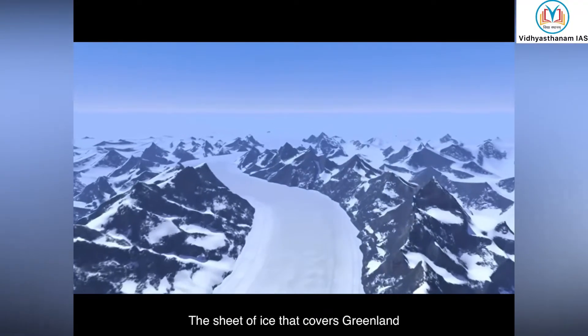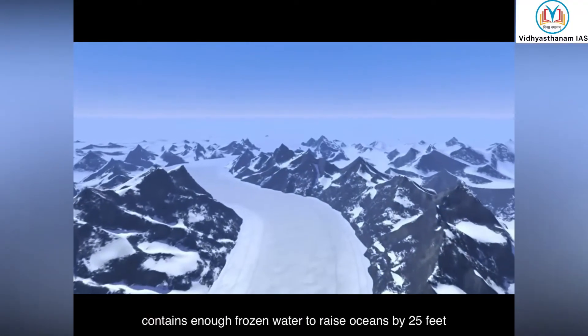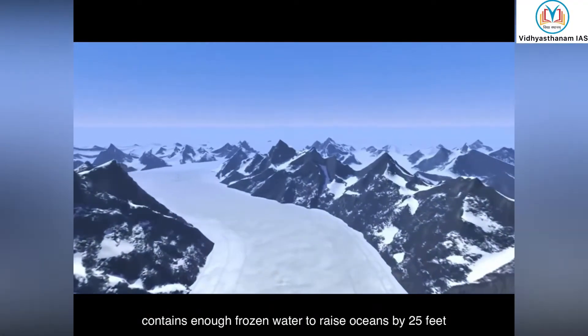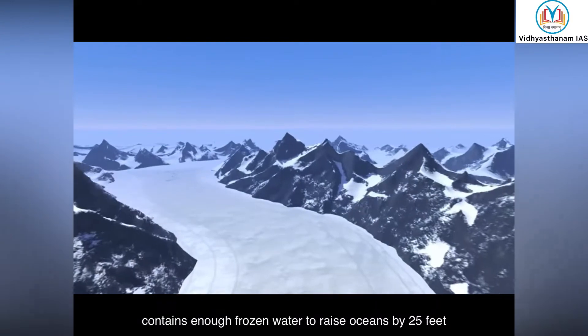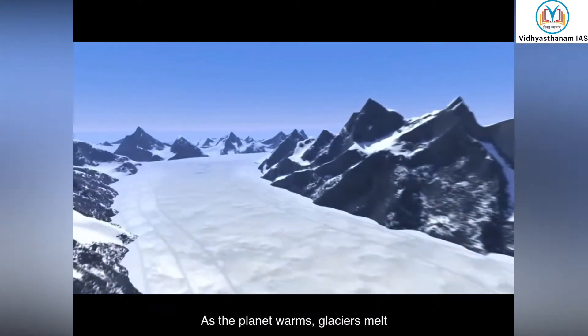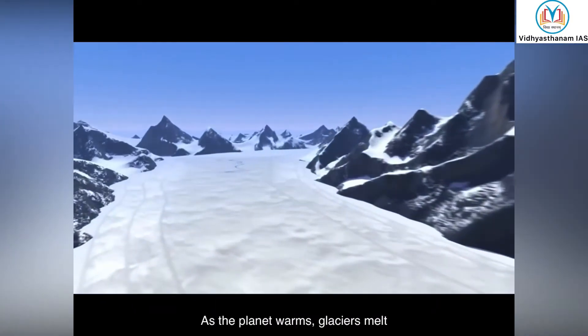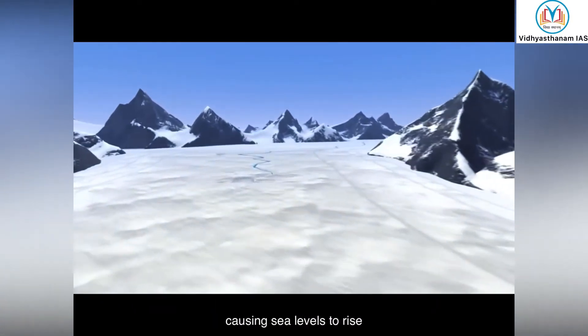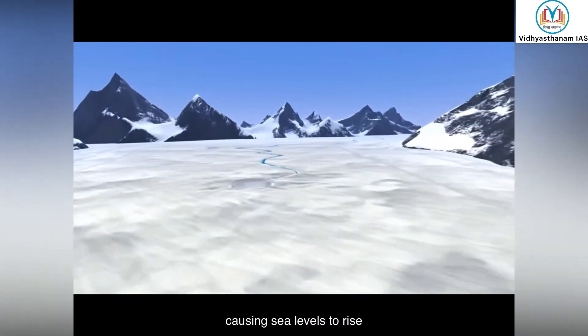The sheet of ice that covers Greenland contains enough frozen water to raise oceans by 25 feet across the globe. As the planet warms, glaciers melt, causing sea levels to rise.